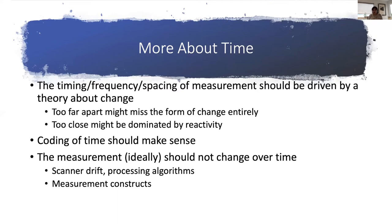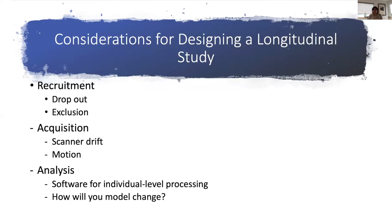You should also think about the measurement constructs themselves. For example, in aging research we looked at executive function constructed as a factor from a variety of subtests. One thing to be sure of is whether a measure means the same thing as someone is changing—for instance, does measuring executive function mean the same thing in the context of mild cognitive impairment across time? That's an important question that can really change some of your conclusions when designing a study that looks at time.